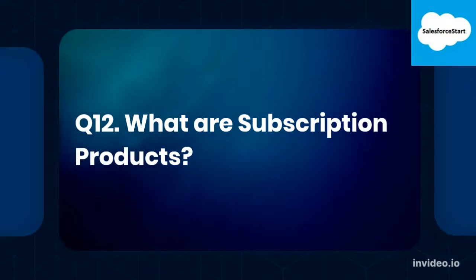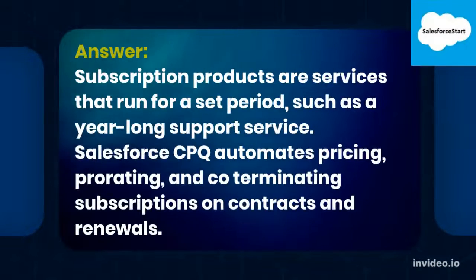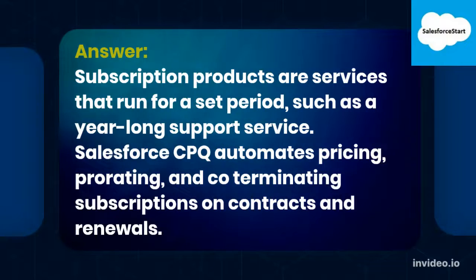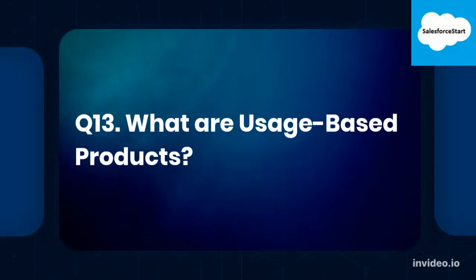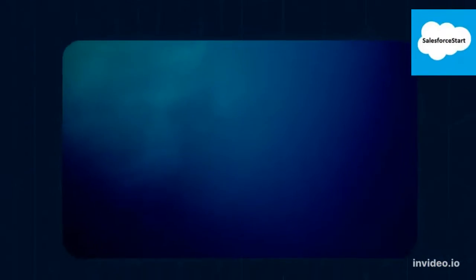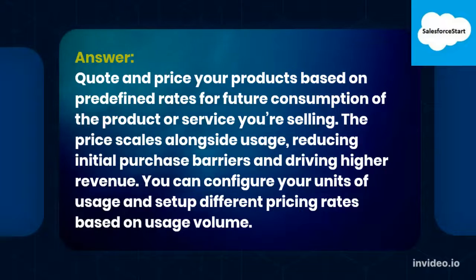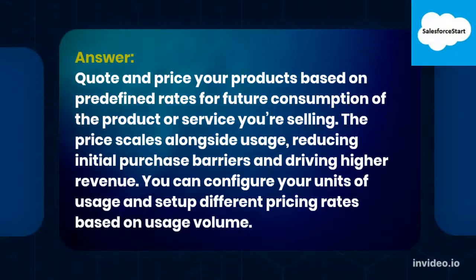Q12. What are subscription products? Subscription products are services that run for a set period, such as a year-long support service. Salesforce CPQ automates pricing, prorating, and co-terminating subscriptions on contracts and renewals. Q13. What are usage-based products? Quote and price your products based on predefined rates for future consumption of the product or service you are selling. The price scales alongside usage, reducing initial purchase barriers and driving higher revenue. You can configure your units of usage and set up different pricing rates based on usage volume.